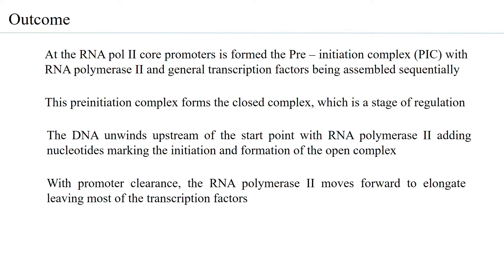With promoter clearance, the RNA polymerase 2 moves forward from the promoter region, eventually leading to elongation where the complete complex gets stabilized and continuously carries on elongation. As it proceeds towards elongation, it leaves many of the transcription factors behind.